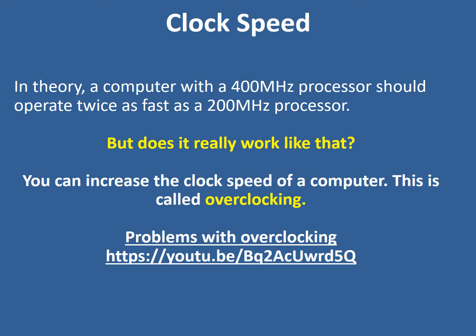In theory, a computer with 400 megahertz would work twice as fast as one with a 200 megahertz processor, because it would operate twice as many instructions. However, it doesn't actually work exactly like that, because there are other factors that might affect processing speed.